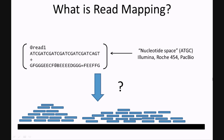That is to say that your reads consist of A, T, G's, and C's. These types of reads would occur from Illumina, Roche 454, and PacBio sequencing.